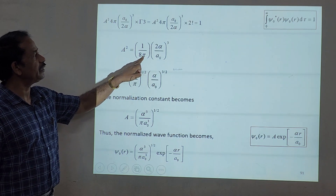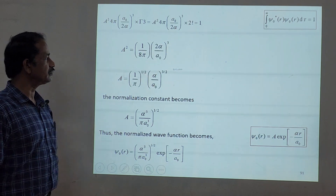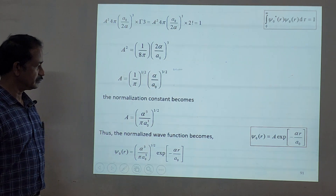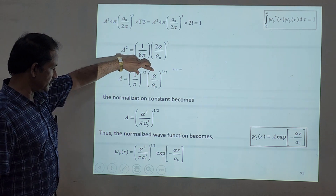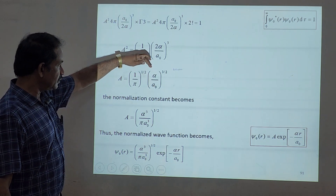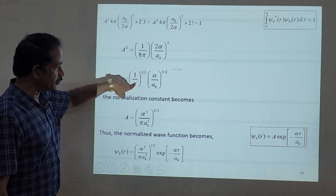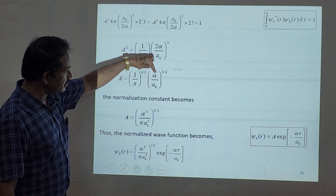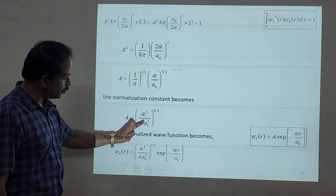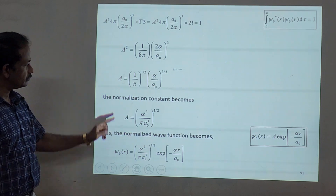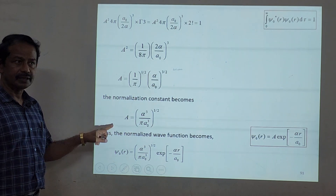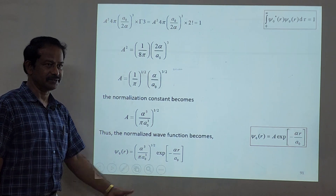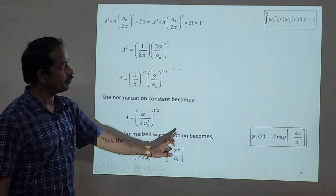So a² = (1/8π)(2α/a₀)³, which simplifies to a = (α³/a₀³π)^(1/2) — that is (α/a₀)^(3/2) times (1/√π). We have now obtained the normalization constant a. Substituting back into the trial wave function gives the complete normalized wave function.